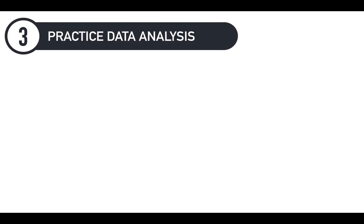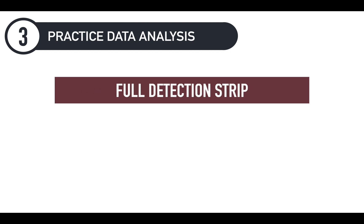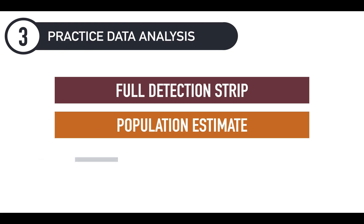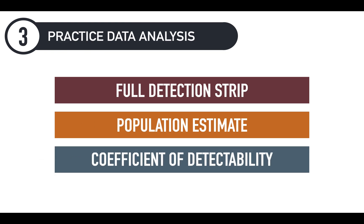Once you've collected your data, I want you to do the data analysis associated with it — specifically, determine what the full detection strip is, determine the population estimate, and calculate your coefficient of detectability. If you need to review how to calculate these, watch the workshop video again, particularly that section, because many students get confused about what to average and where to look for the 20% drop. That's what this practice data is for — so I can see that you know how to do it before we start collecting actual data.